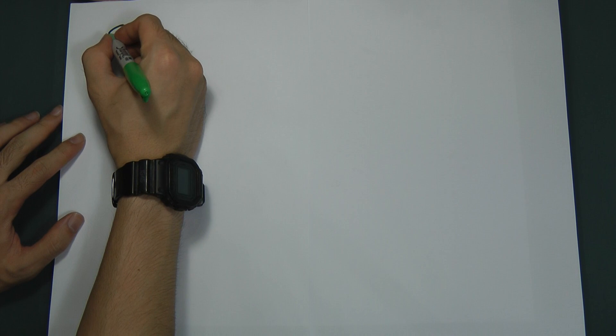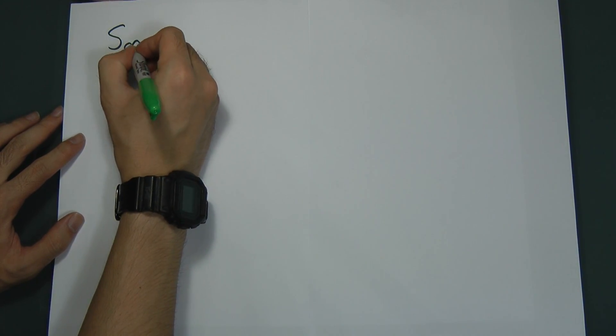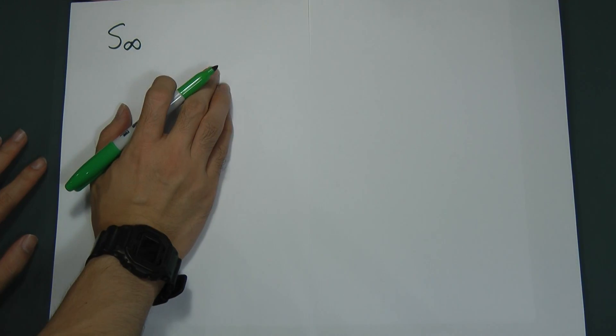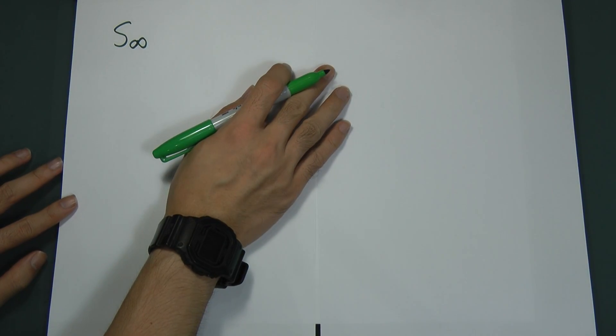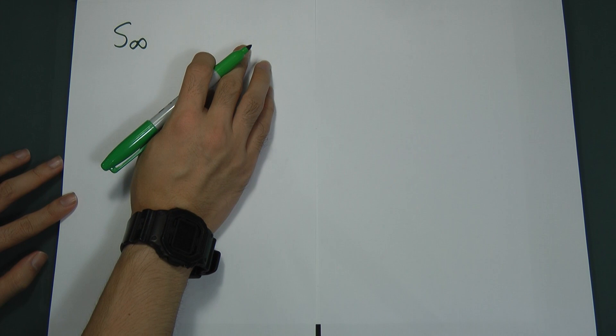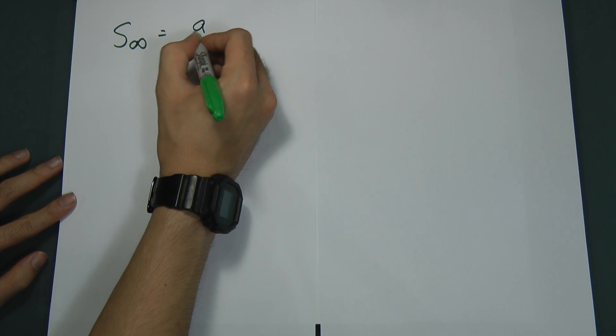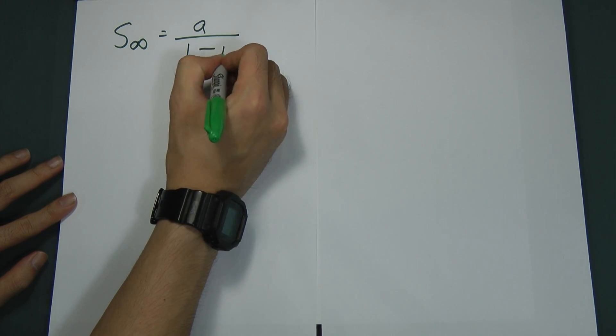So in this video I'm going to cover the sum of infinity. In the last video, I taught about the term Tn equal to AR^(n-1) and also Sn. The sum of infinity only happens in geometric progression, and the formula is a over 1 minus r.